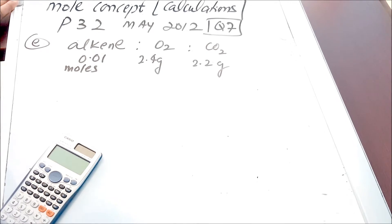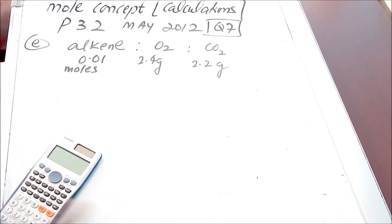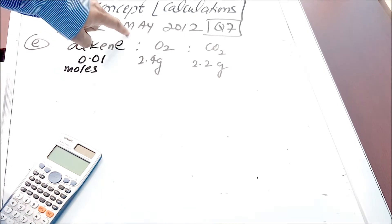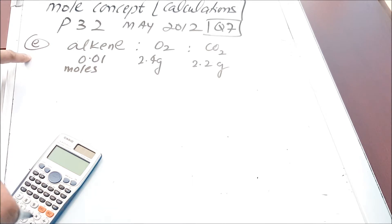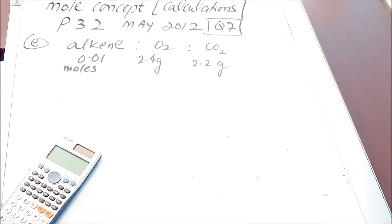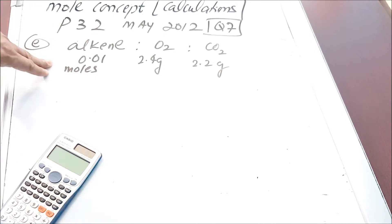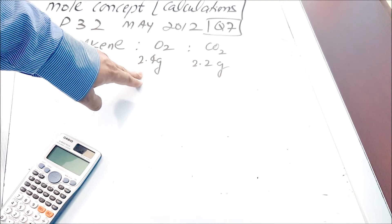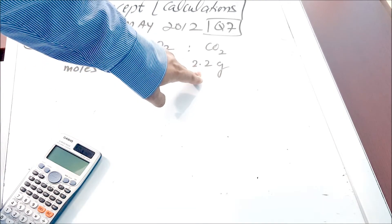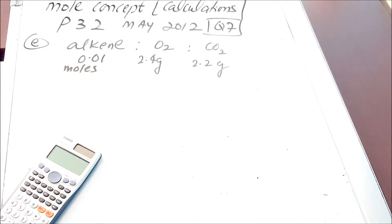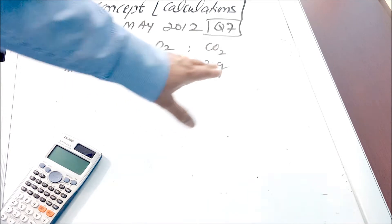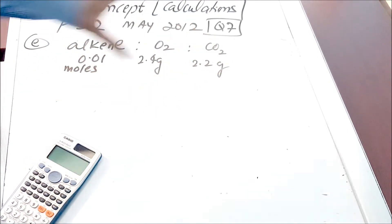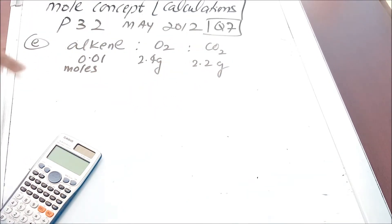Now if you open paper 32 for May 2012, there is question number 7, part D, which has a chemical calculation question. The question says there is an alkene — 0.01 moles — and they give you the mass of oxygen as 2.4 g and the mass of carbon dioxide as 2.2 g. If you notice carefully, they're not compatible: this is moles and these are masses in grams. So we need to make them compatible before we start looking at the mole ratios.